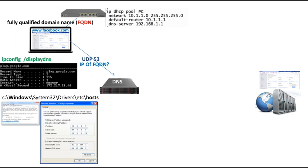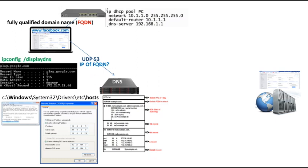You get the IP address of the DNS server from your DHCP server or from your network card settings, and then you query this DNS server to get the IP address of your domain — like facebook.com. You send a query to the DNS server on port UDP 53. This DNS server contains zone files, which hold the mappings between FQDNs and their IP addresses, and based on this data, the DNS server provides your laptop with the IP address of facebook.com.